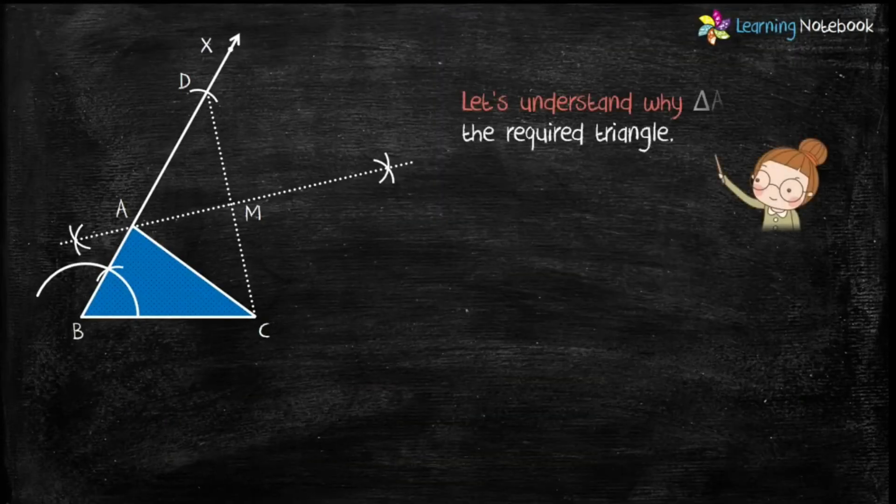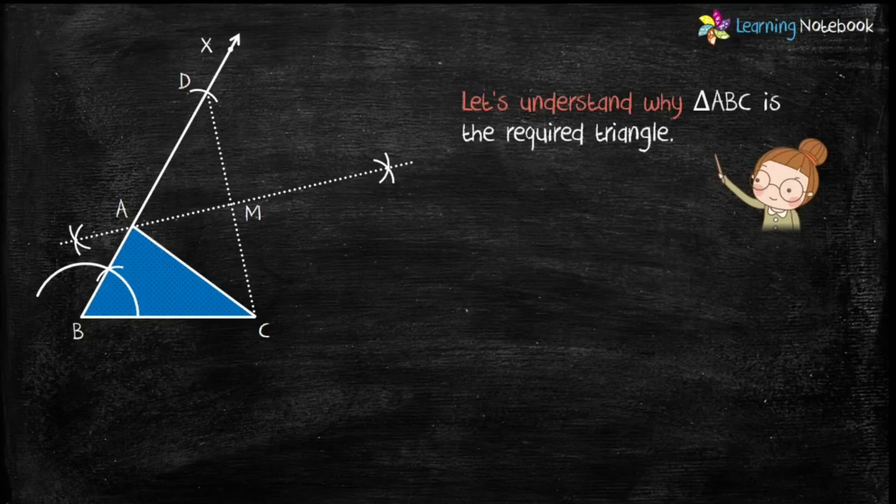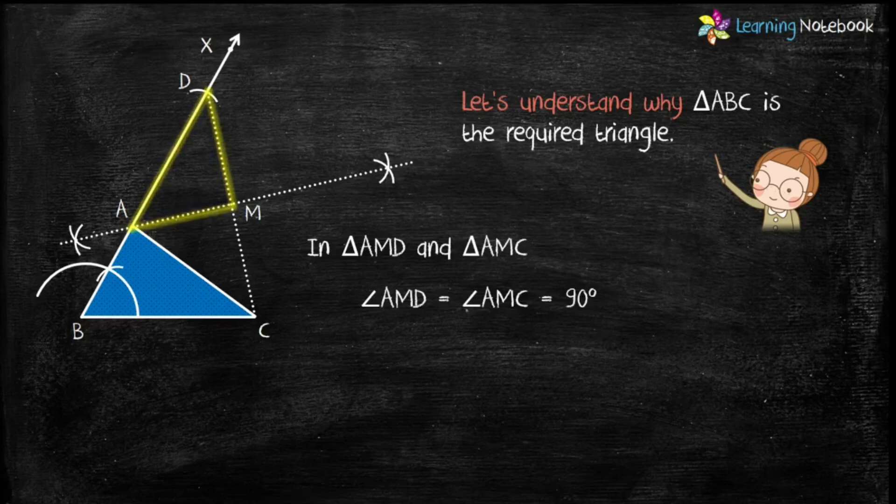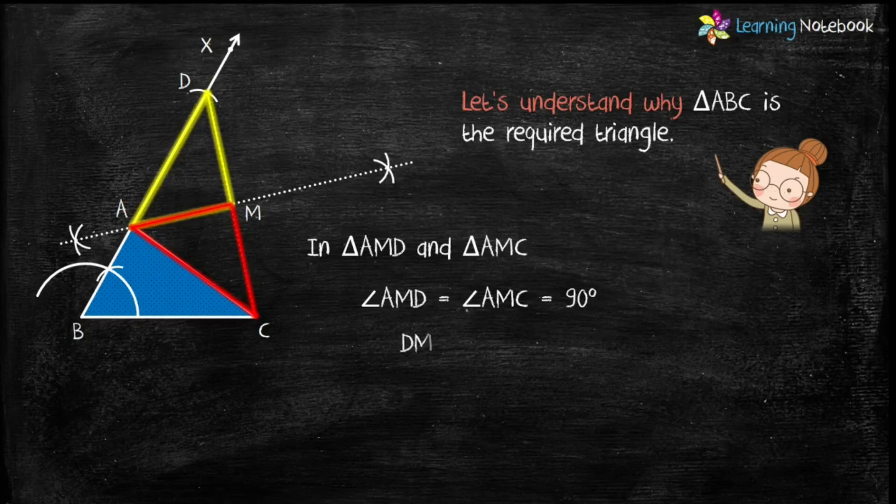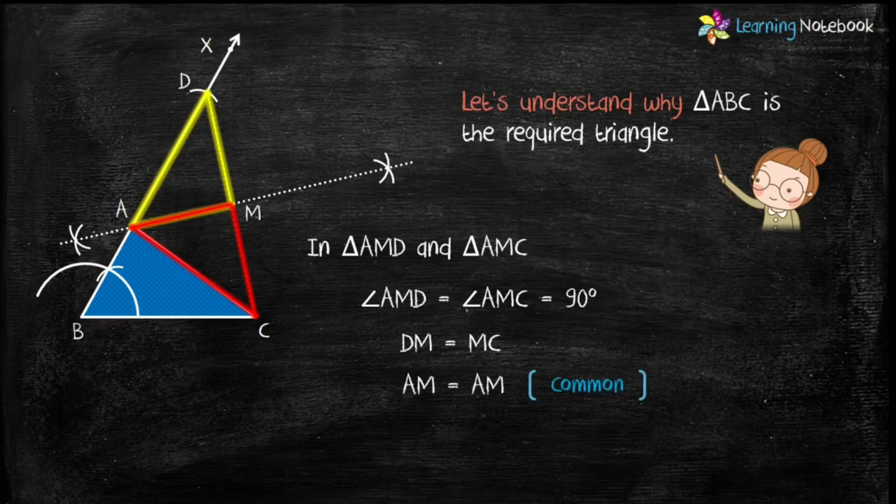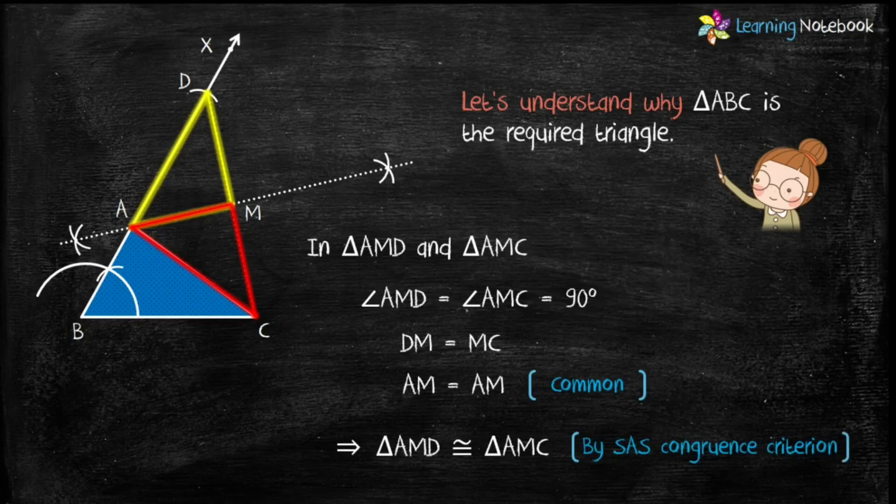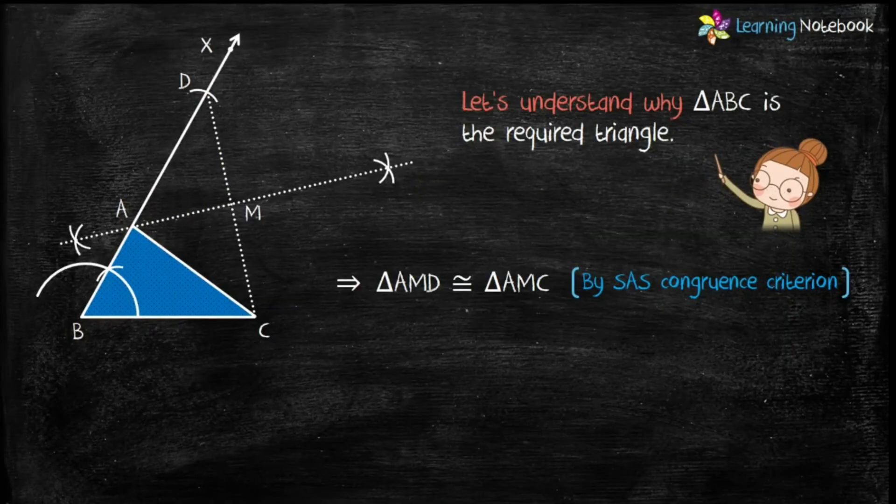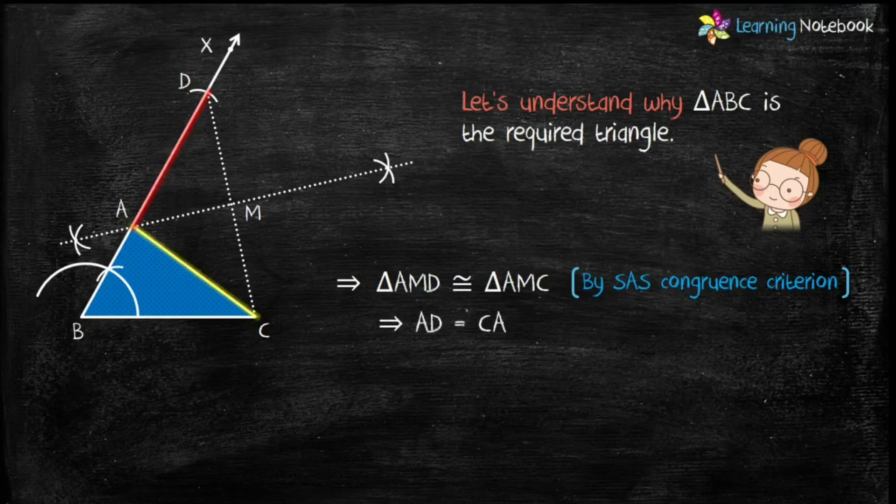Now, let's understand why triangle ABC is the required triangle. In triangle AMD and AMC, angle AMD equals to angle AMC equals to 90 degree. Also, DM equals to MC due to construction of perpendicular bisector. And AM equals to AM which is common to both the triangles. Therefore, triangle AMD is congruent to triangle AMC using SAS congruence criterion. Since both the triangles are congruent, therefore, AD equals to CA.